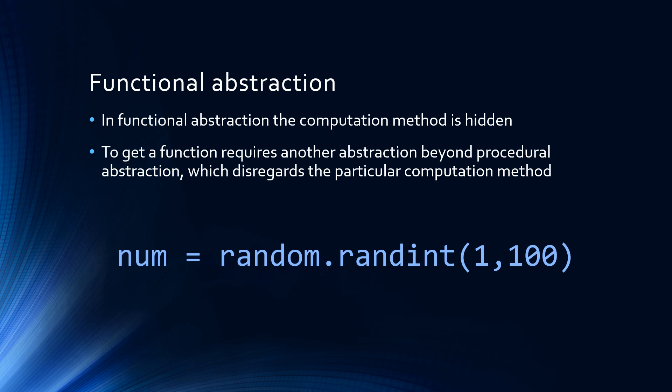What this means is that if I call something such as random.randint, it doesn't matter to me how it generates a random number. I just have to know that it will generate a random number, and it will be between the two values that I pass the function.